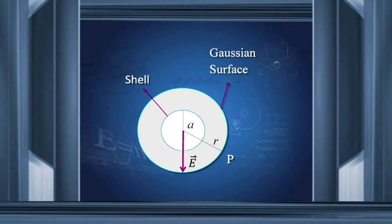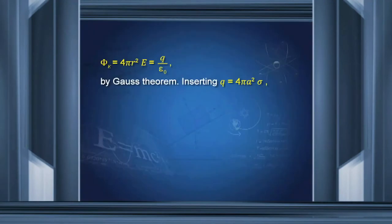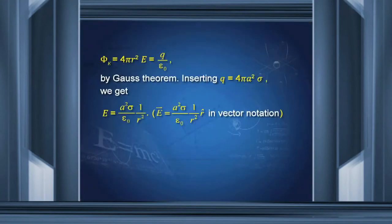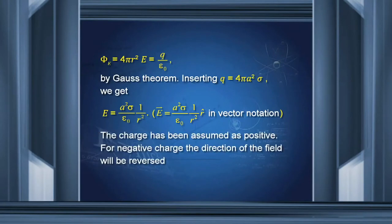We draw a spherical Gaussian surface at radius R outside. The point P is at distance R from the center. Since the Gaussian surface is a sphere, the field by symmetry must be radial and normal at each point on the surface. Therefore, the flux is 4πR²E, which equals Q/ε₀. The charge inside is the charge on the shell, which is 4πA²σ. Equating these, we get E equal to A²σ/ε₀ into 1/R².